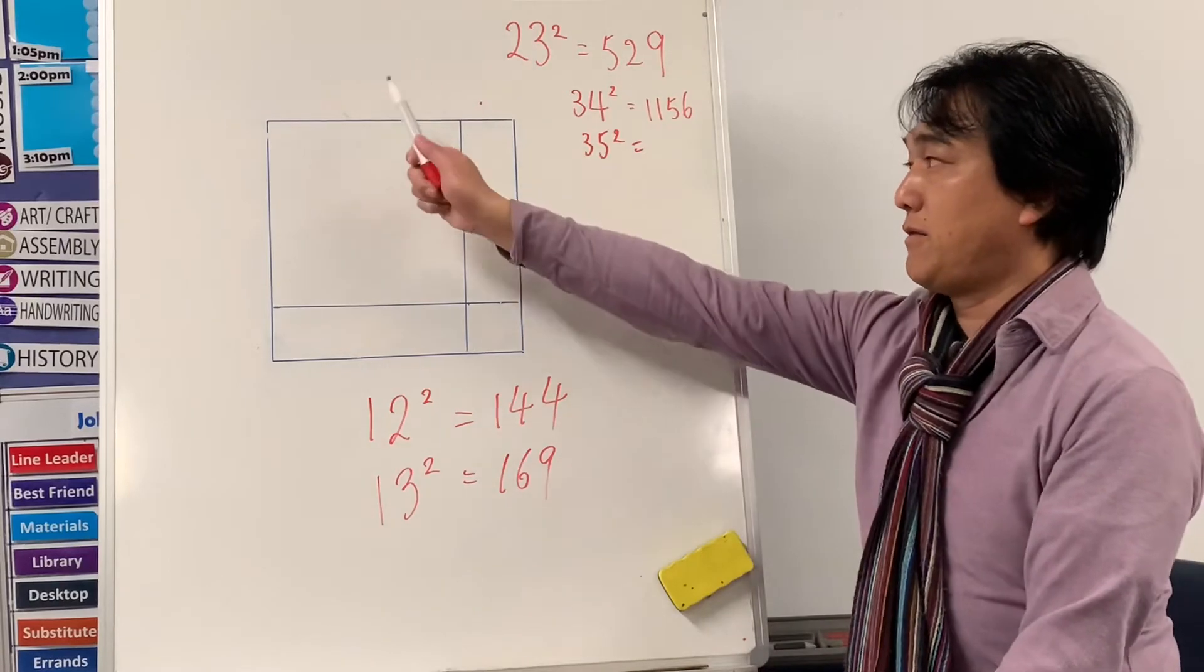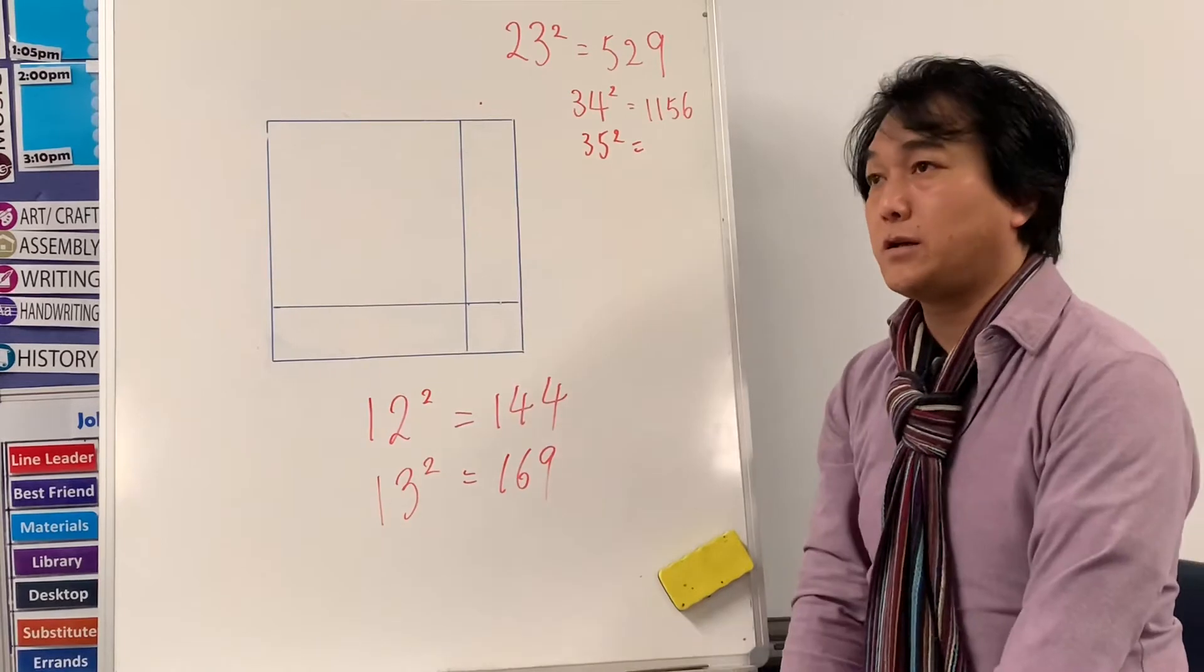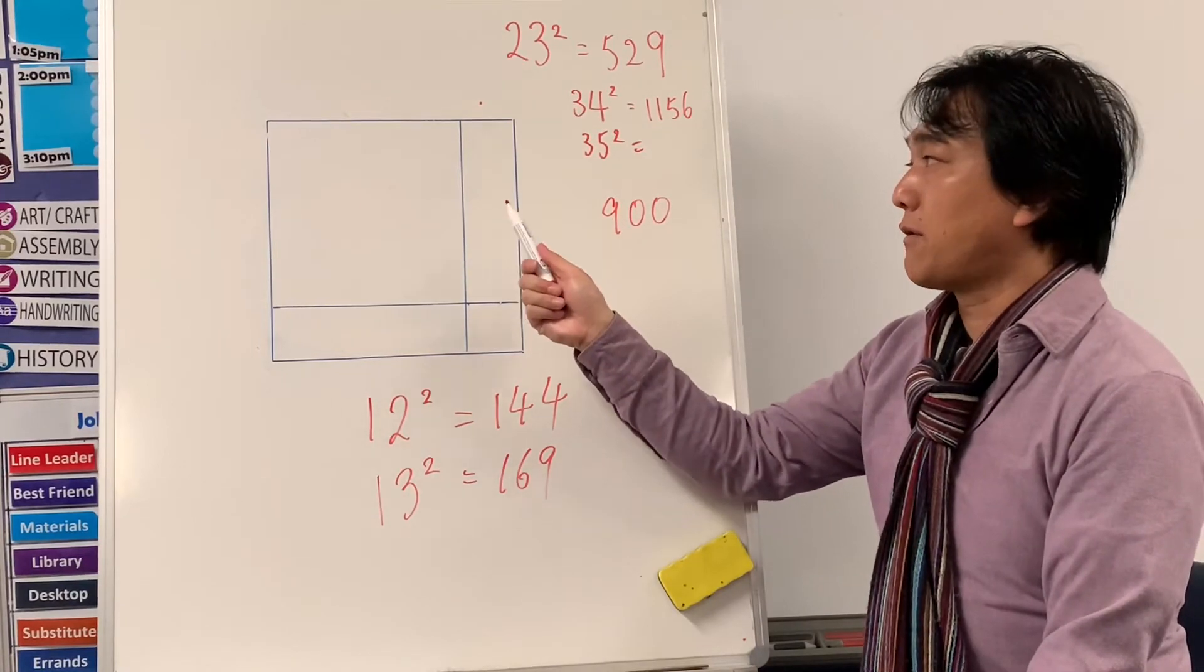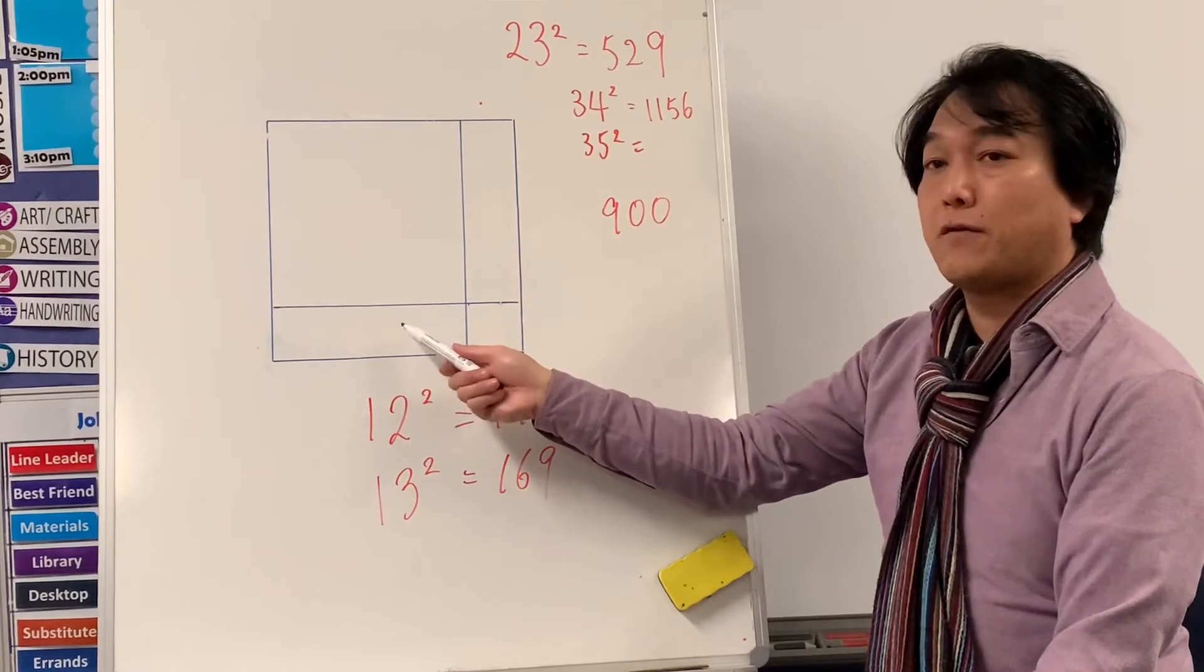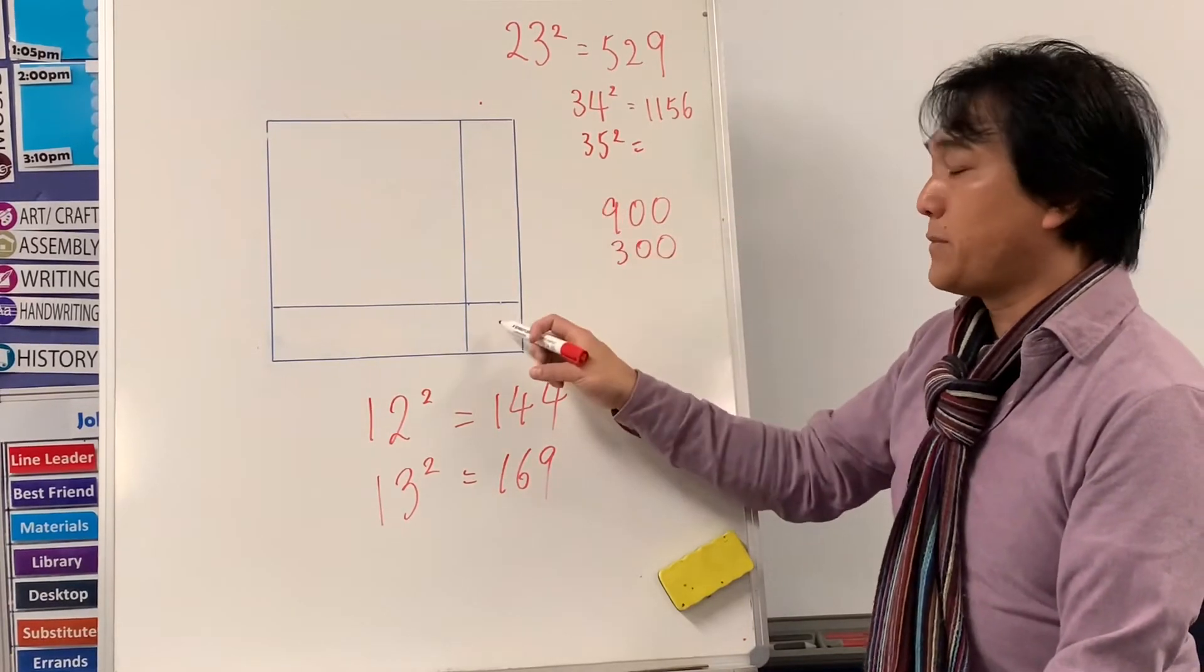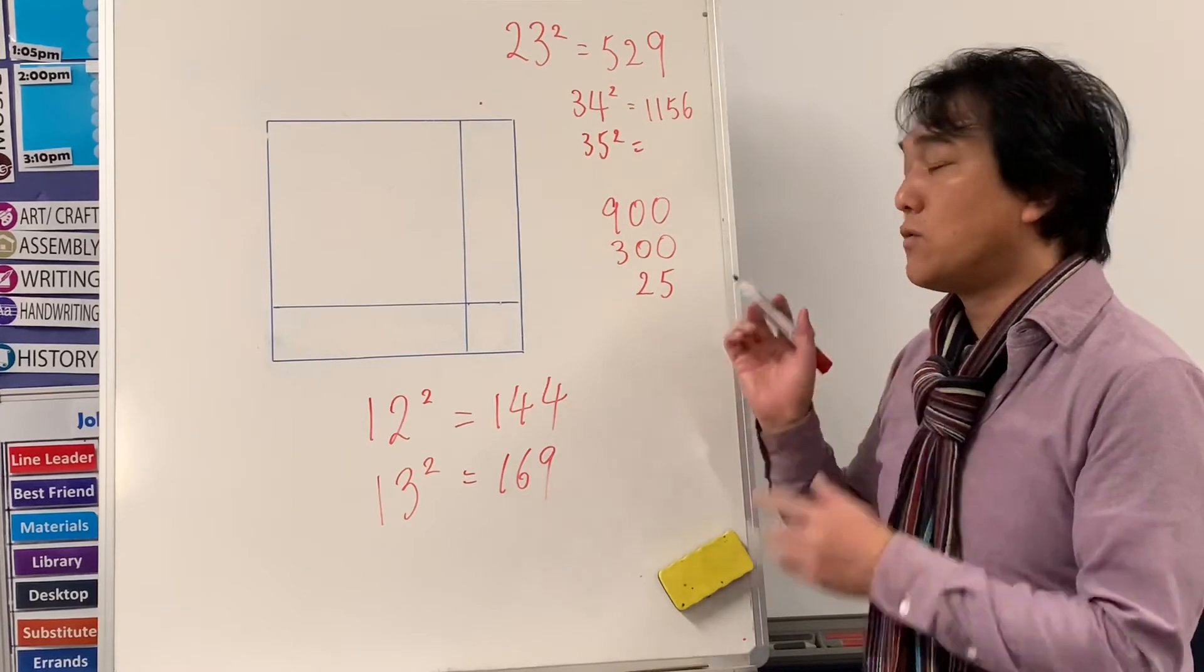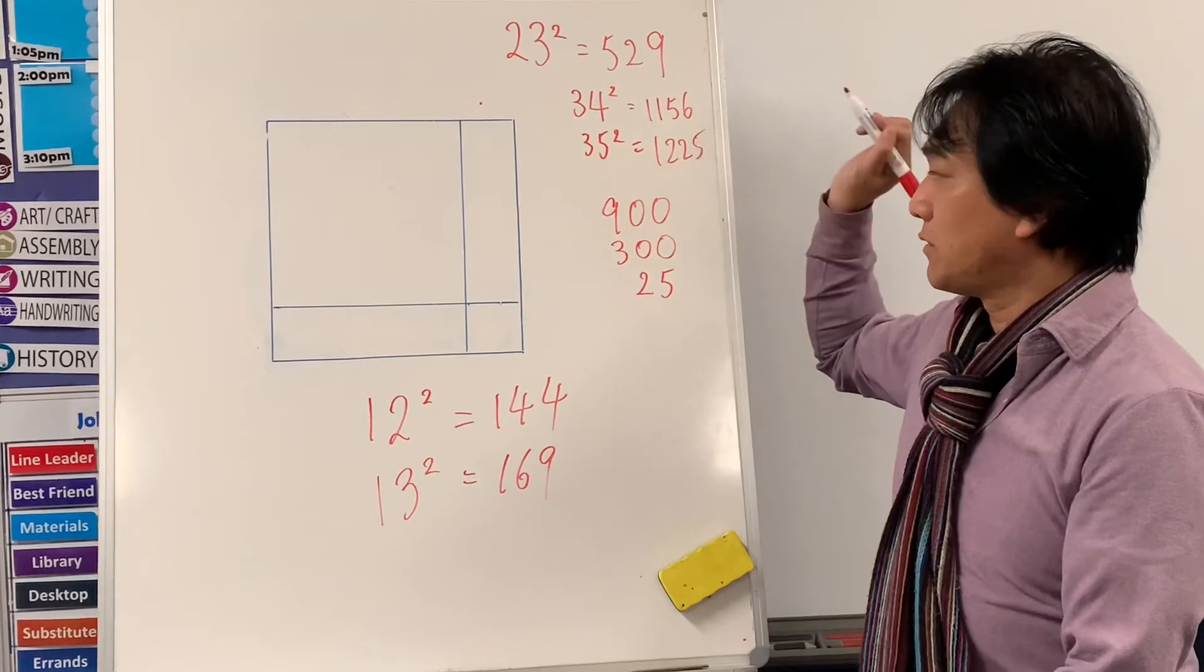So let's practice. Thirty-five squared. Ready? This is thirty. This is five. Thirty-five. So this is thirty times thirty, that means nine hundred. This part is thirty times five, that's not thirty times five. That's one hundred fifty. This is also one hundred fifty. I think that would be three hundred. This should be five times five, which is twenty-five. If I can do this in my head, that's one thousand two hundred twenty-five.